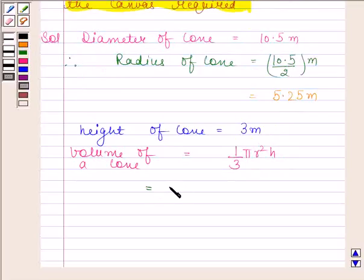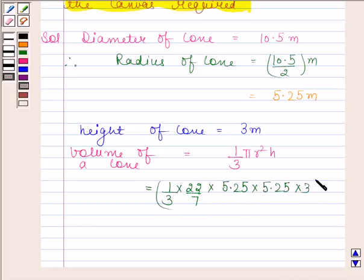we get 1 by 3 into 22 by 7 into 5.25 into 5.25 into 3 meter cube. Cancel 3 from both numerator and denominator.